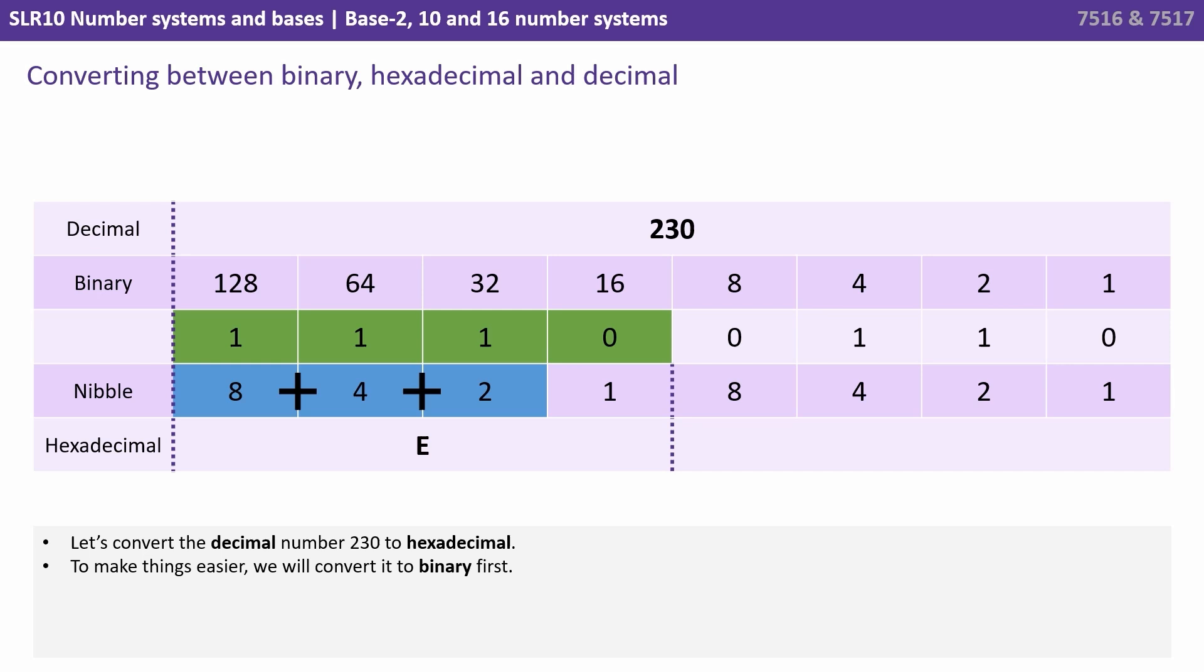So the left hand nibble, we have a 1 in the 8 column, a 1 in the 4 and a 1 in the 2. 8, 9, 10, 11, 12, 13, 14. Now remember in hexadecimal 14 is E. And in the right hand column, we have a 1 in the 4 column and a 1 in the 2 column, 4 plus 2 is 6. So the decimal number 230 in base 10 is E6 in base 16 hexadecimal.